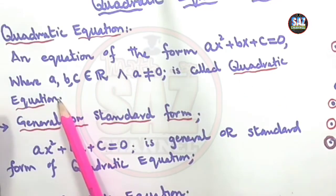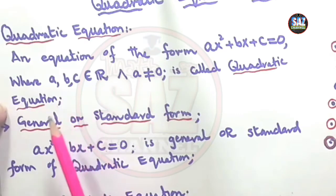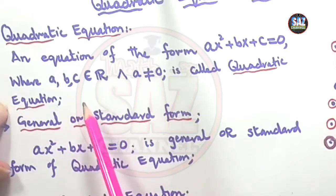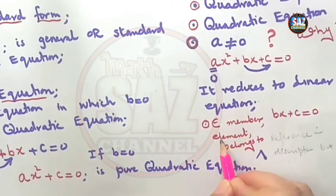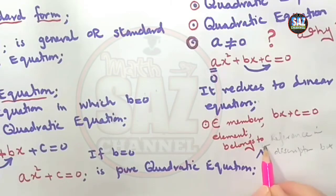As we know, every topic has its own language and language helps us to understand that topic. Here the symbol, this small ∈, stands for member, element, or belongs to, and this is a symbol for and. So it's important to understand the language of the topic as well for better understanding.